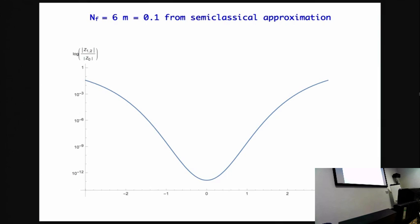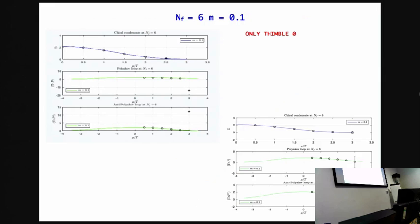There are cases, taking into account for example, N_f equals 6 and this value of the mass. This is the ratio of the logarithm of the contribution to the partition function attached to different critical points. So this is the critical point attached to the root on the real axis, and these are the other two, which are equal in modulus. At this value of mu over T, you expect a very important contribution coming from the other thimbles, which is exactly what you see. If you take into account only one thimble, then you fail.